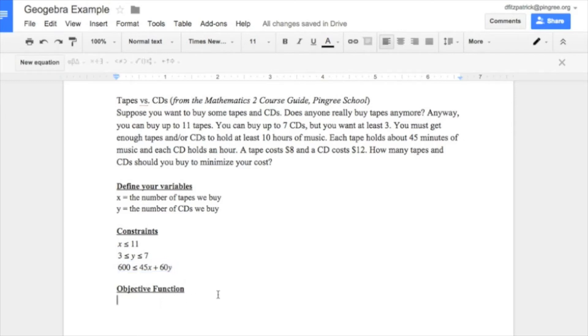Last part we have to define is our objective function. We want to minimize our cost. So we'll write that, minimize total cost. We'll call it t. And we'll say t is a function of x and y, and it equals 8 times the number of tapes plus 12 times the number of CDs. So here is our problem defined.